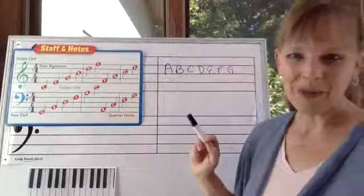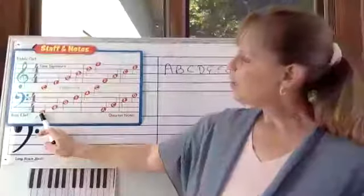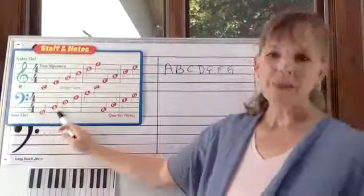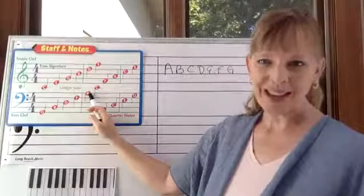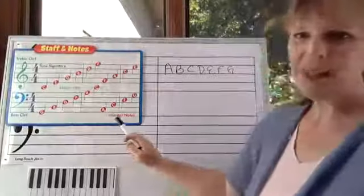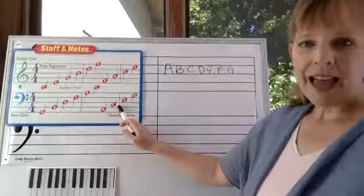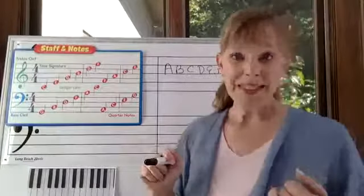Then for the bass clef, you've got G, B, D, F, A. Great Big Dogs Fight Animals. That's the way I learned it. And the spaces are A, C, E, G. All Cows Eat Grass.